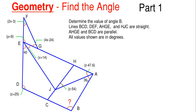We are given some information: angles of 40 over here and 36 over here, and other angles in terms of variables z, x, and y. We are also told that line BCD is a straight line, DEF is a straight line, AHGE is a straight line, and HJC is also a straight line. We are also told that BCD is parallel to AHGE, and all angles are shown in degrees.